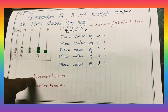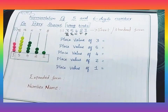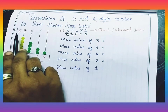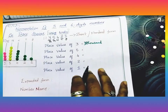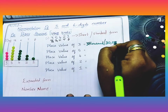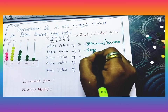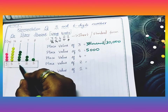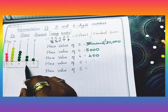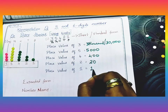Stick three bindis for the ten thousands place. Now start writing the place values of all these digits. The place value of three is thirty thousand. Five is five thousand. Four is four hundred. Two tens is twenty. One means just one.